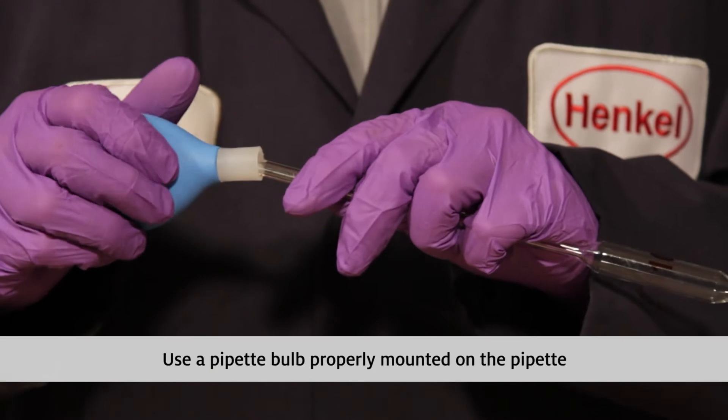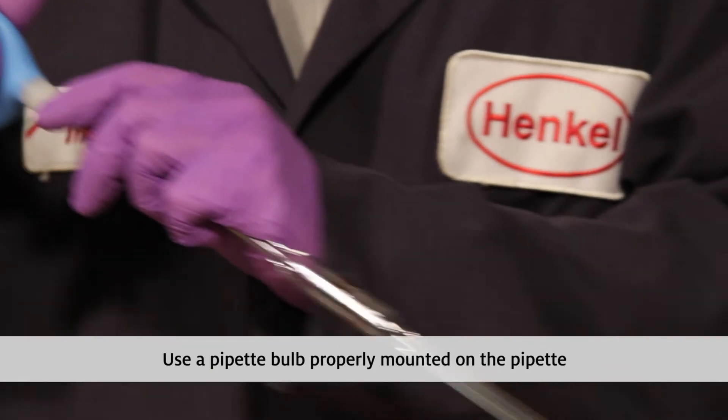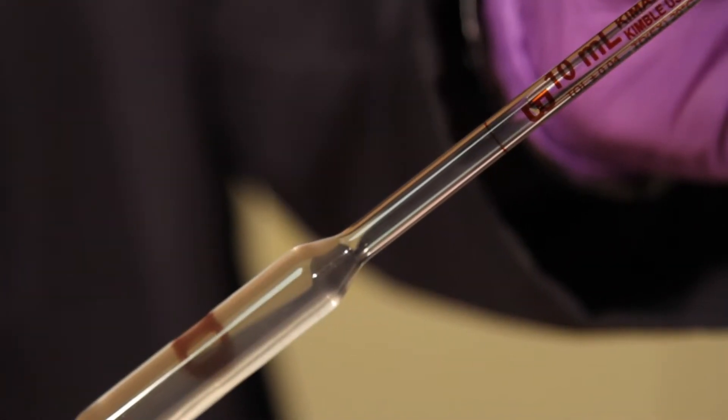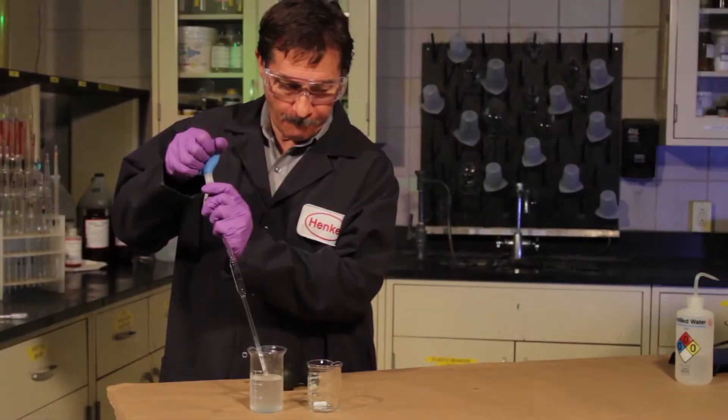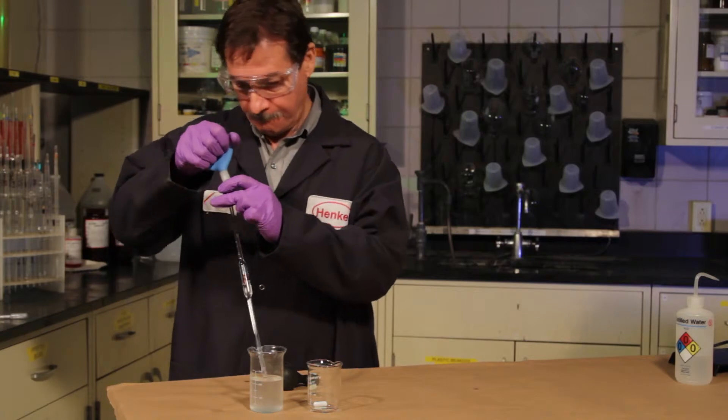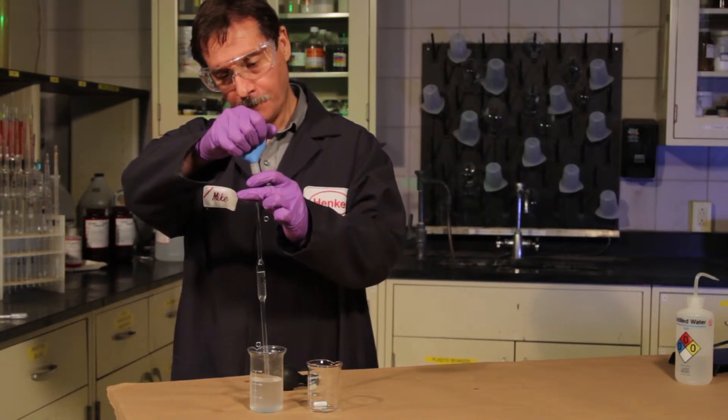Use a pipette bulb, properly mounted on the pipette to draw up the sample. Draw up your sample until the level hits the marked line near the top of the pipette. You may have to do this a few times before you become proficient at getting the level just right.